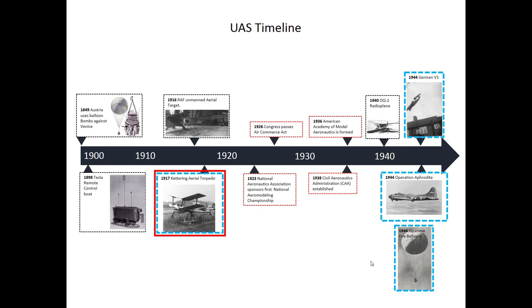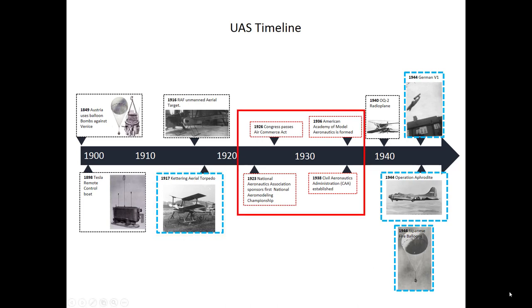A link to a YouTube video of some of the early test flights is included in the learning activities section. In 1923, the first recorded gathering of model aircraft enthusiasts took place in St. Louis, Missouri. Thirteen years later, in 1936, the American Academy of Model Aeronautics was formed. What is now known as the Academy of Model Aeronautics, or AMA, is a non-profit organization whose purpose is to promote the development of model aviation as a recognized sport and worthwhile recreational activity.